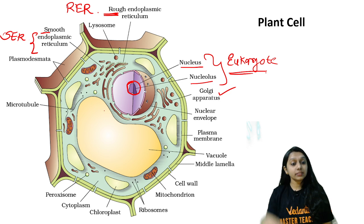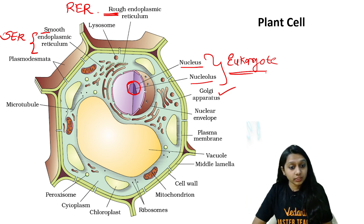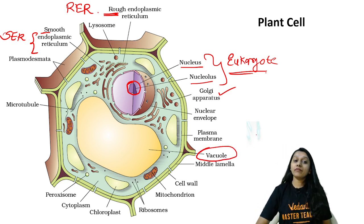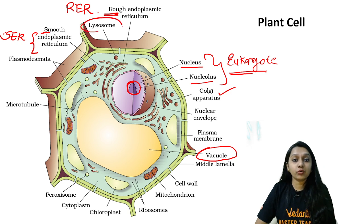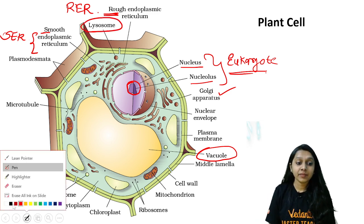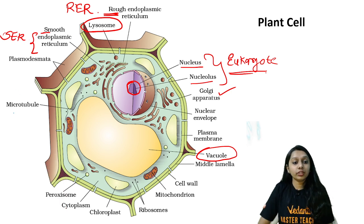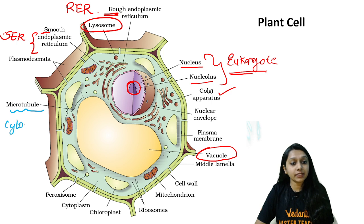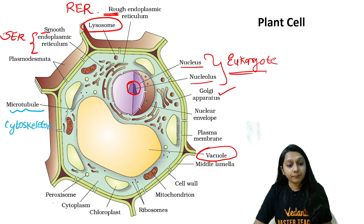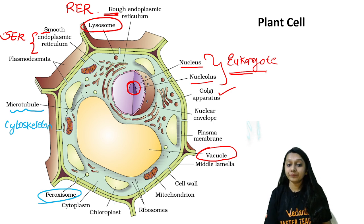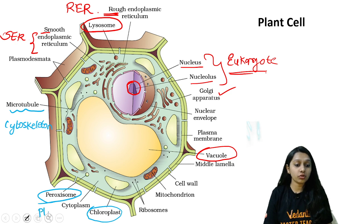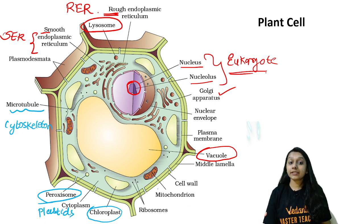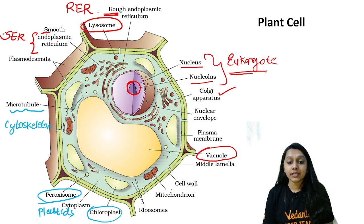The endomembrane system will include your vacuole, lysosomes, and other organelles. Above the endomembrane system, if you see, you get microtubules which are part of the cytoskeleton. Peroxisomes will oxidize chemicals. You will get chloroplasts which help in photosynthesis — you can also call them plastids. You will also find mitochondria, which is our powerhouse of the cell.